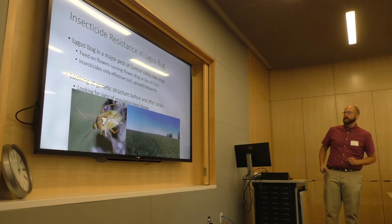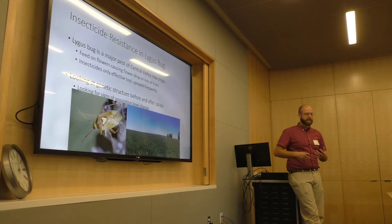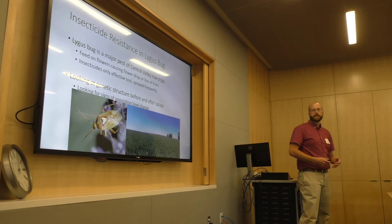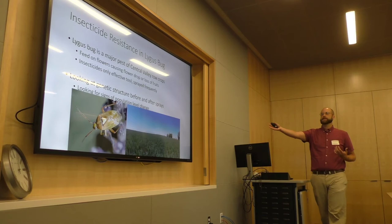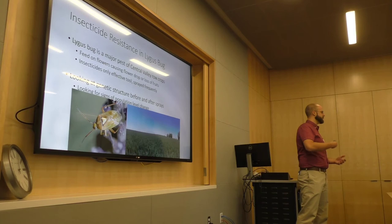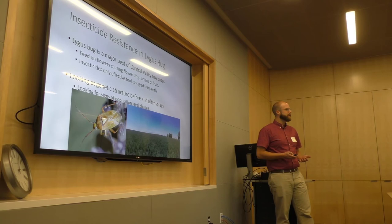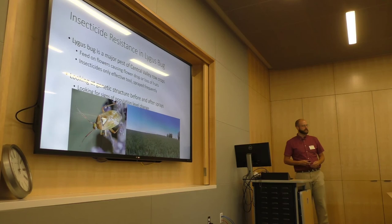Finally, we're collaborating on a project with a team out of Wisconsin looking at lygus bug, which is a major pest in many row crops around the Central Valley. These insects feed on flowers, causing flower drop, nut loss, boll loss in cotton, and the only effective tool we have is insecticides. In alfalfa seed production, where you let the plant go through its entire life cycle, you're spraying seven to eight times a season for lygus bug. We're doing work looking at how the population changes genetically from the beginning to the end of the season, looking for buildup of insecticide resistance.